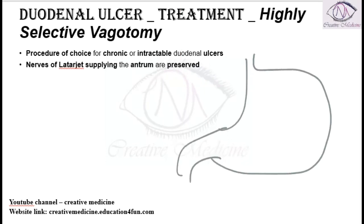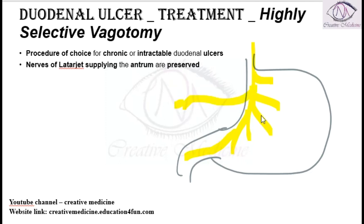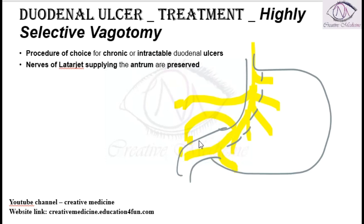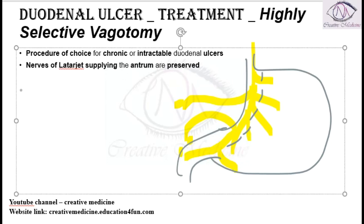Looking at the anatomy, the vagus nerve gives branches to the parietal cells, a branch to the hepatic trunk, a branch to the gastric outlet, and the nerve of Latarjet supplying the antrum. In highly selective vagotomy, only the parietal branches are cut, while the nerve of Latarjet, the hepatic branch, and the celiac plexus branch are all preserved.